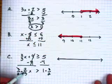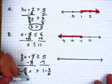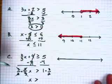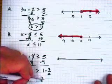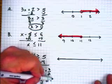Because the 3's cancel. The 2's will cancel. And we're left with x is greater than, well, 1 times anything is just that thing, 3 over 2 or 1 and 1 half.